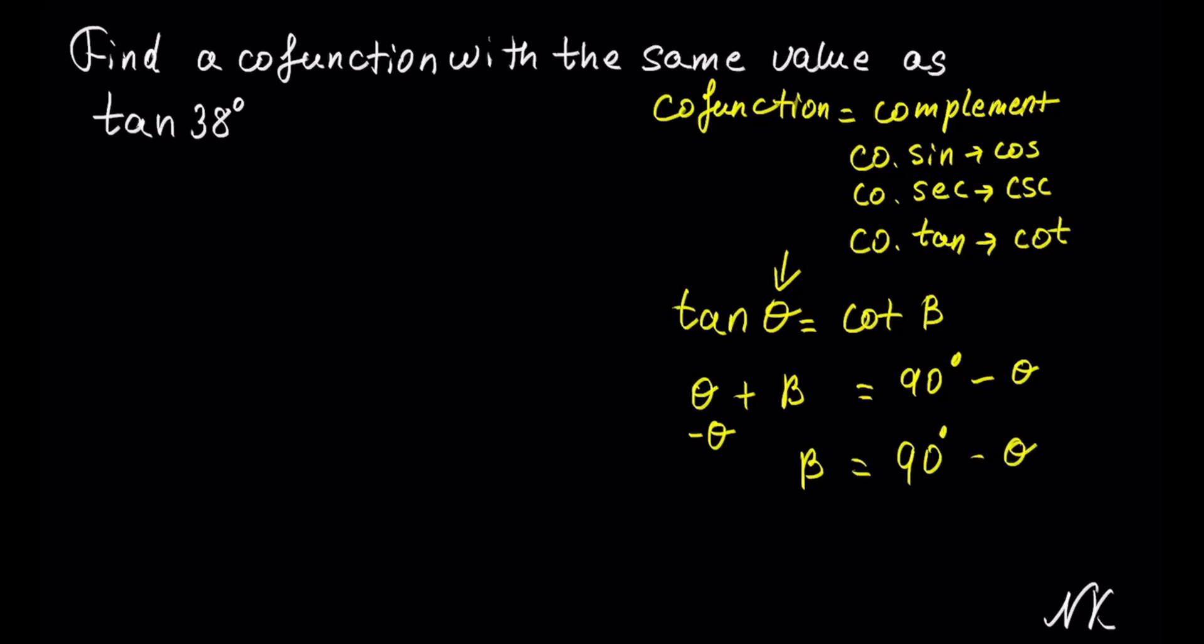So, our identity is tangent of theta is equal to cotangent of, instead of beta, let's put 90 degrees minus theta.